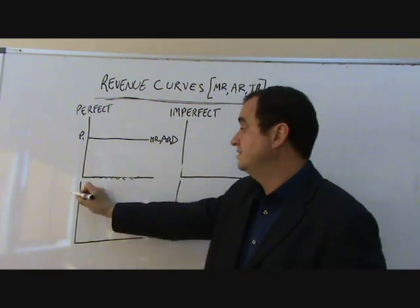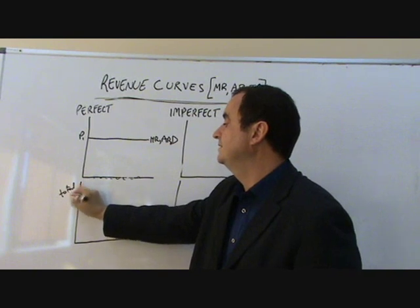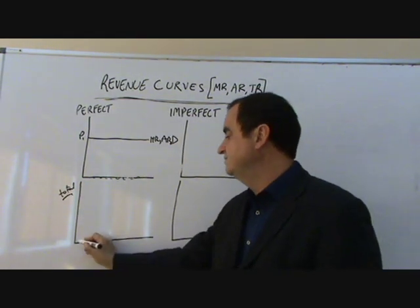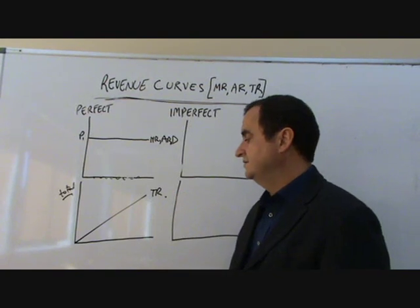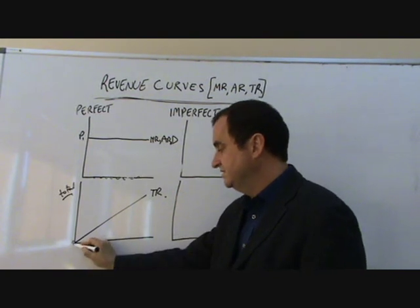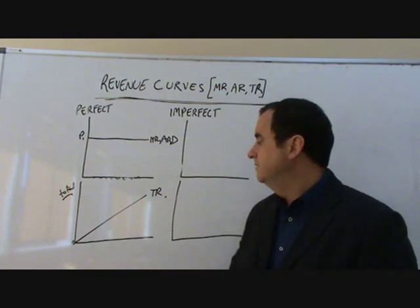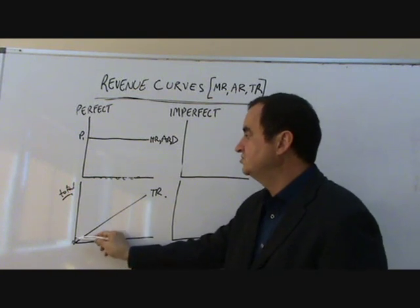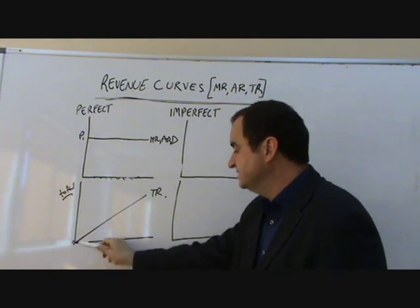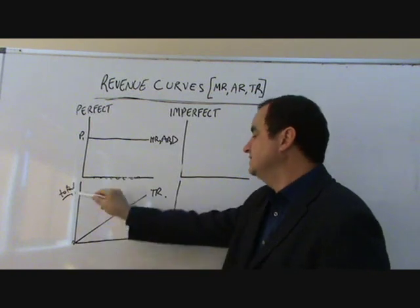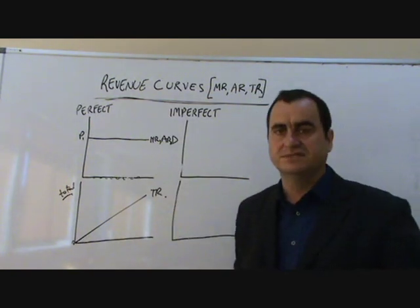On a total scale, total revenue will simply rise in a linear fashion. It starts at zero — with no output there's no revenue. But with each extra unit they sell, they'll get an extra P1. If they sell 10, they'll get 10 times P1; if they sell 20, they'll get 20 times P1, and so on. So this is a very easy set of curves.